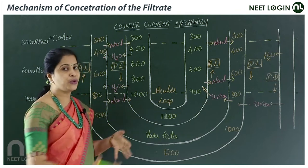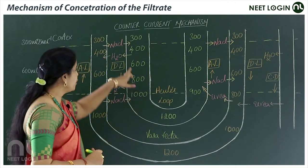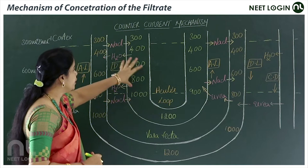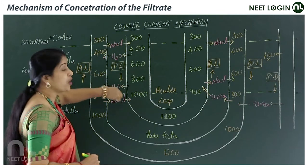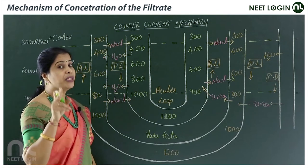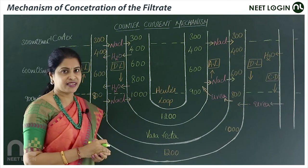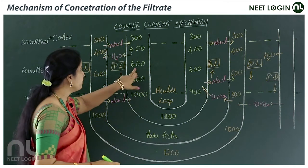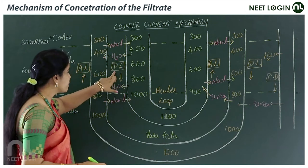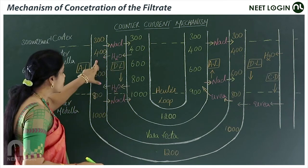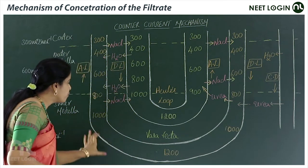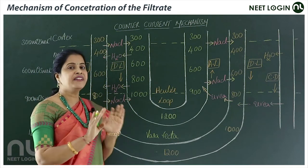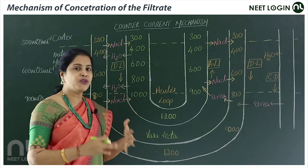In the descending limb of the loop of Henle, it is permeable to water but impermeable to electrolytes — it does not allow reabsorption of electrolytes. Whatever water gets reabsorbed is exchanged with the ascending limb of the vasa recta, as you can see very clearly in the diagram.